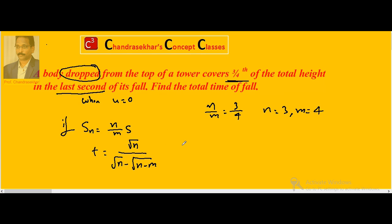Therefore, the total time of fall becomes root 4 divided by root 4 minus root of 4 minus 3. This is 2 divided by 2 minus 1. So, 2 seconds.